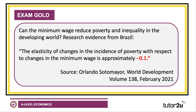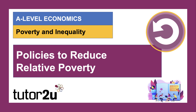Recent research published in World Development in spring 2021 by Orlando Sotomayor argued that there is some evidence a minimum wage can reduce poverty and inequality in the developing world. Sotomayor's research focused on Brazil and found that the elasticity of changes in the incidence of poverty with respect to changes in the minimum wage is approximately minus 0.1 - suggesting that a higher minimum wage can reduce poverty, but with low elasticity. If you raise the minimum wage by 20%, you might only bring down the incidence of poverty by about 2%, suggesting you need a range of policies to tackle the root causes of relative poverty in low-income countries.